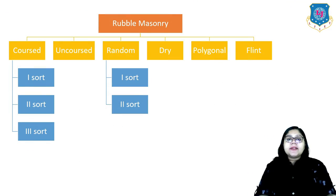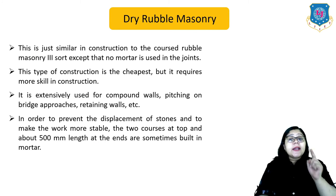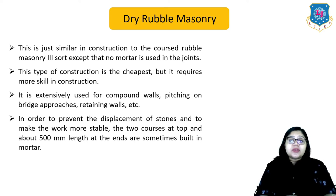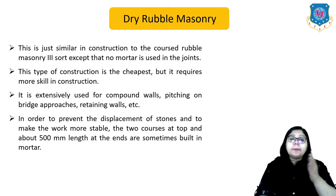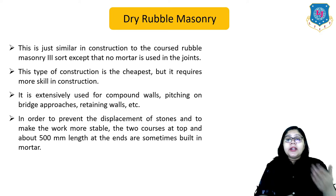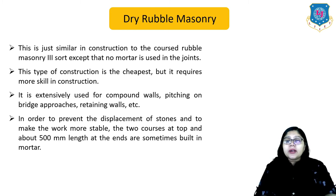Dry rubble masonry is similar to coarse rubble masonry three-shot except that no mortar is used in the joints. This type is the cheapest but requires more skill in construction. It is extensively used for compound walls, pitching on bridge approaches or retaining walls. To prevent displacement of stones and make the work more stable, the two courses at the top and about 500 mm length at the ends are sometimes built with mortar.